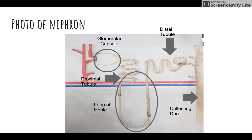Here is a photo of the nephron where you can see the glomerular capillaries. This is where further secretion and reabsorption occurs due to a concentration gradient.